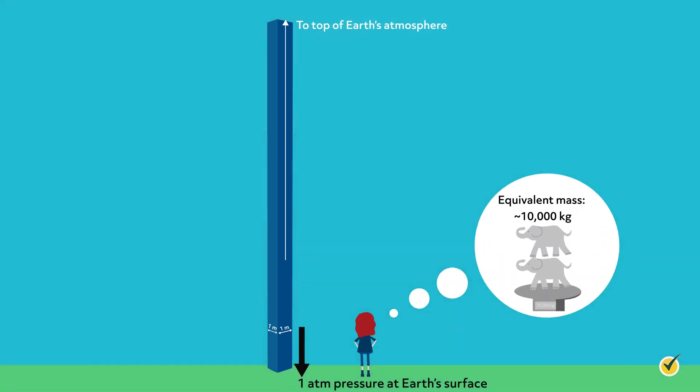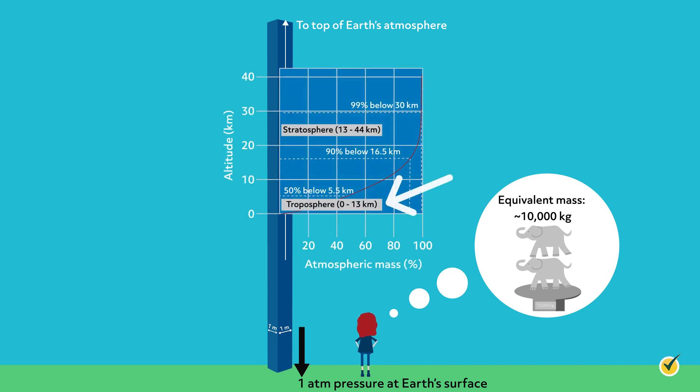One atmosphere of pressure is equivalent to about a 10,000 kilogram mass pushing down in a square meter area. We can think of all that mass existing in a very tall and thin column above the surface. The atmosphere is denser near the surface and thins as the distance from the Earth increases.